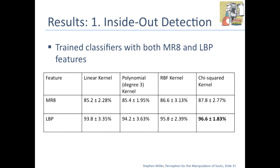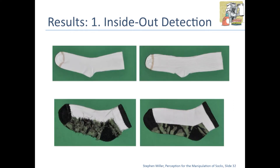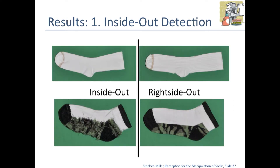For inside-out detection, we trained on MR8 and LBP features. We received a pretty good success rate of 96% using LBP with a chi-squared kernel. Here's an example of the sorts of differences we could detect between inside-out and right-side-out socks using this support vector machine.